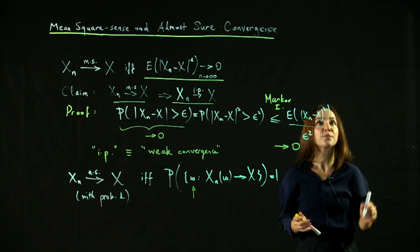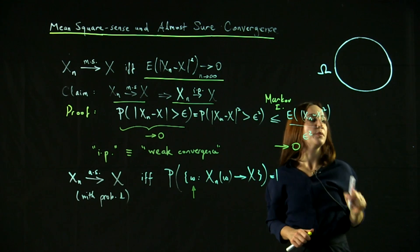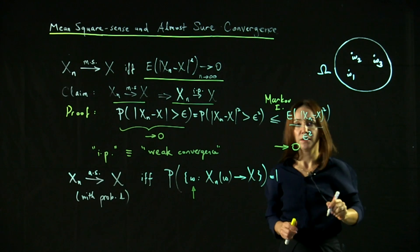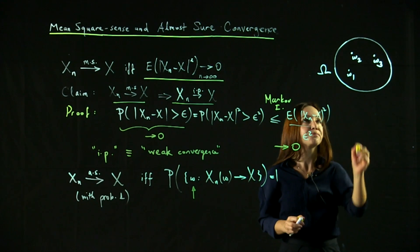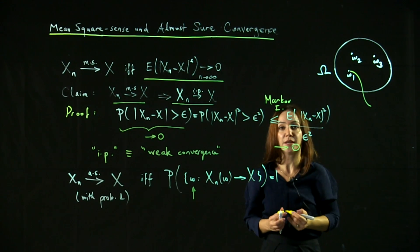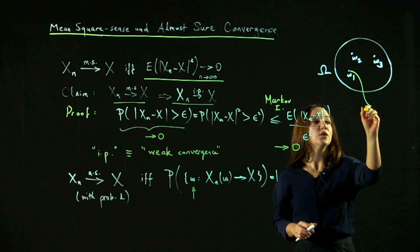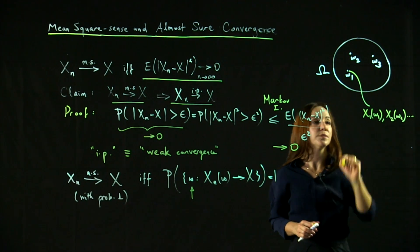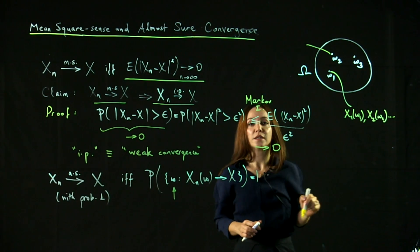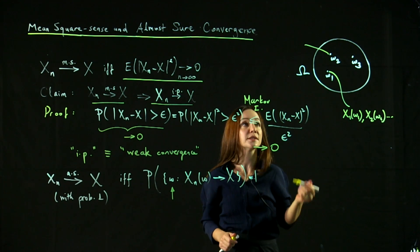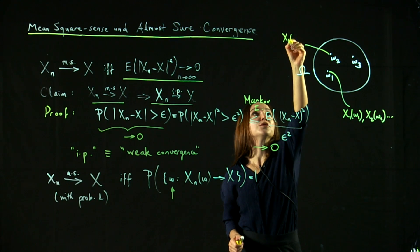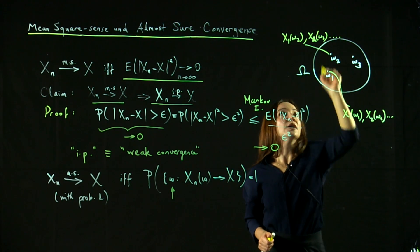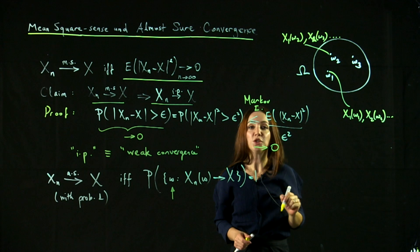So let me try to illustrate this by drawing the sample space. This is our sample space and there are different outcomes w1, w2, w3 and so on. Now, once this w1 is selected or is realized, it leads to a sequence x1 of w1, x2 of w1 and so on.